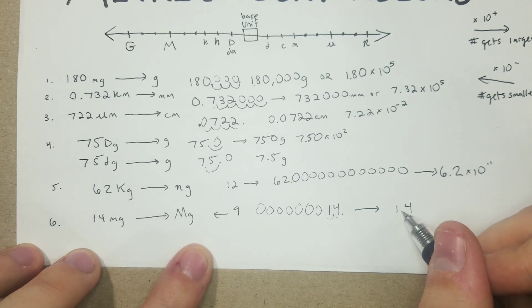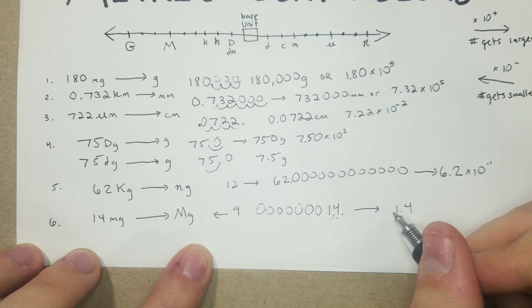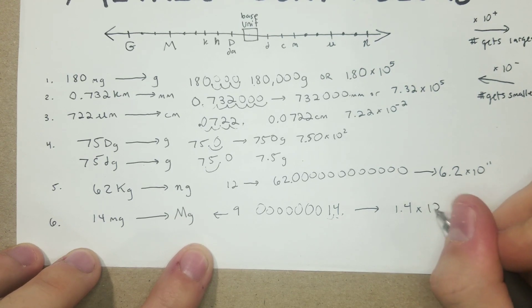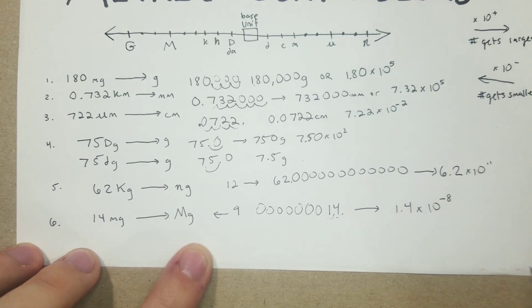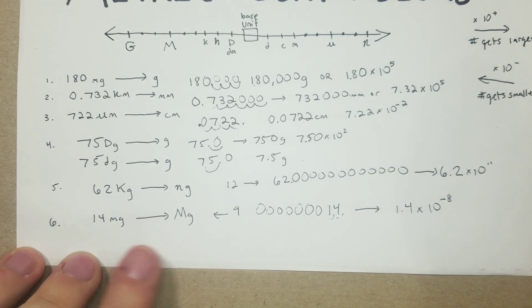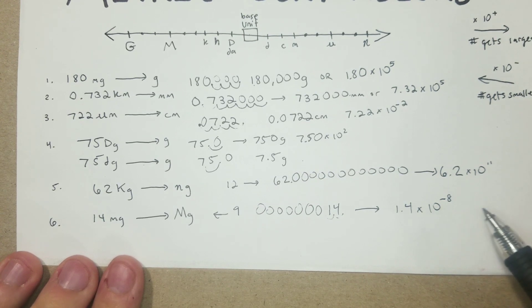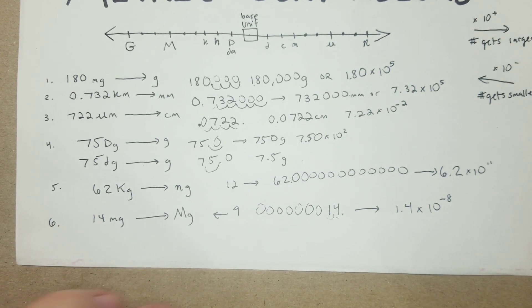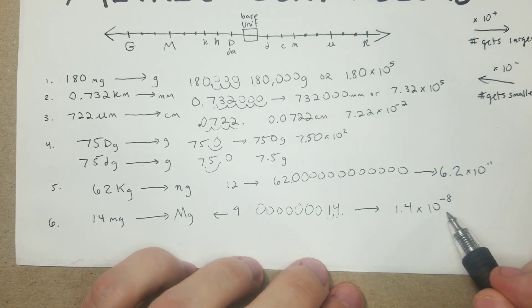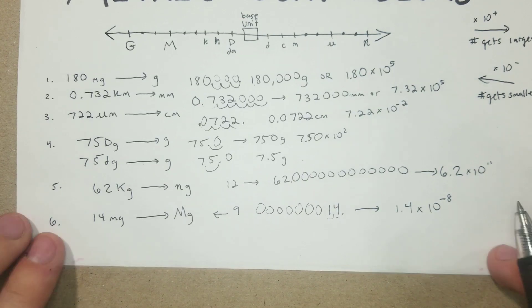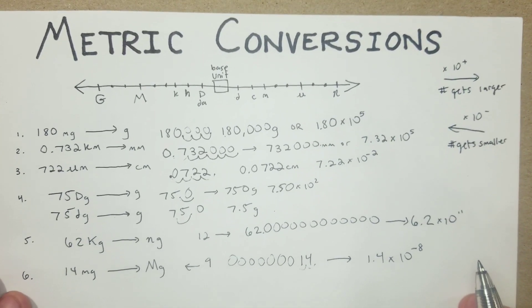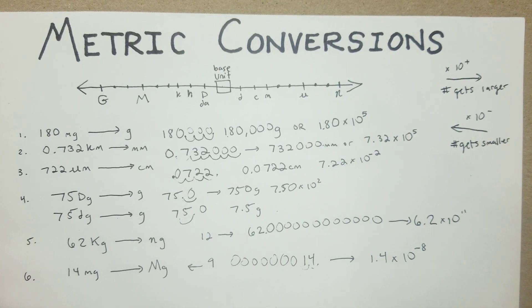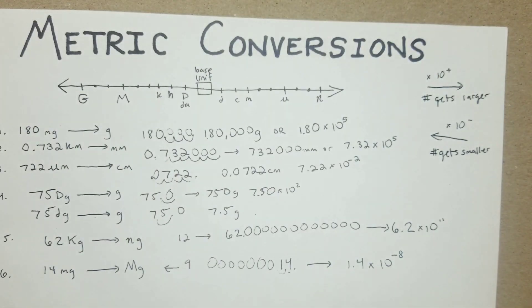So we moved one to get to 1.4 and an additional eight, making it times 10 to the negative 8. Remember: moving toward smaller prefixes on the number line makes the number larger — times 10 to a positive exponent. Moving toward larger prefixes makes the number smaller — times 10 to a negative exponent. That's a brief overview of metric conversions. I'll probably go into some non-metric conversions after this. Hope this helped!